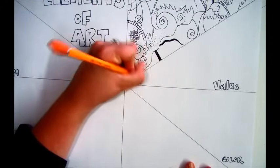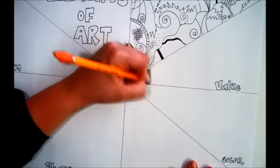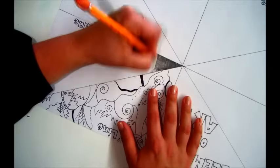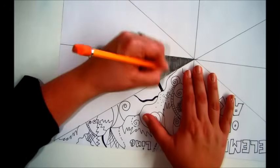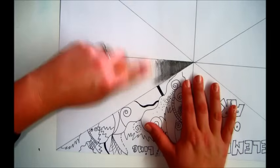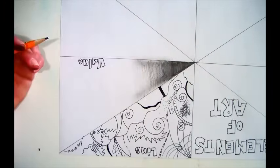Next, for value, you're going to practice gradation. Gradation is the shift in value. Value is the lightness or the darkness of objects. And gradation is the shift in value, going from dark to light.